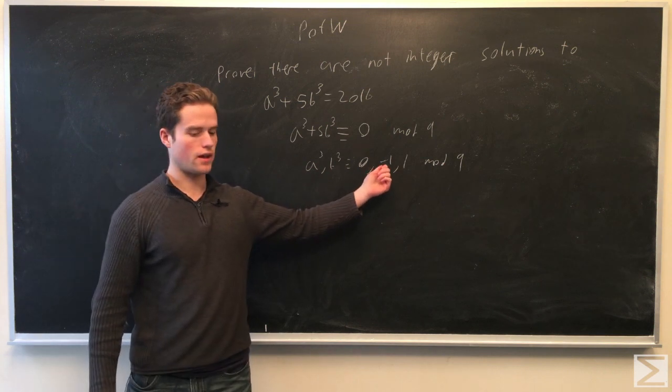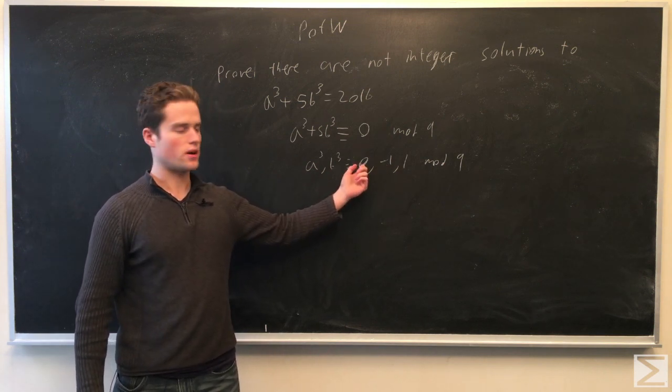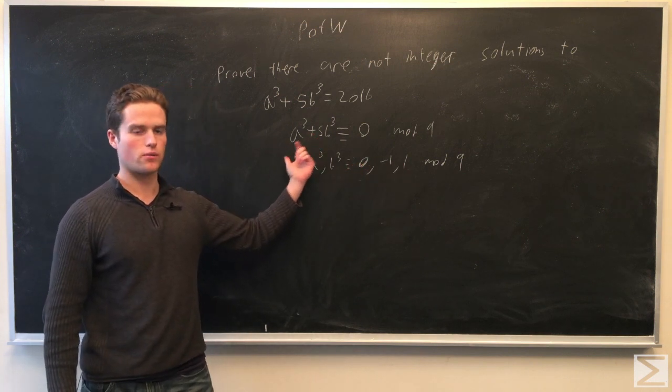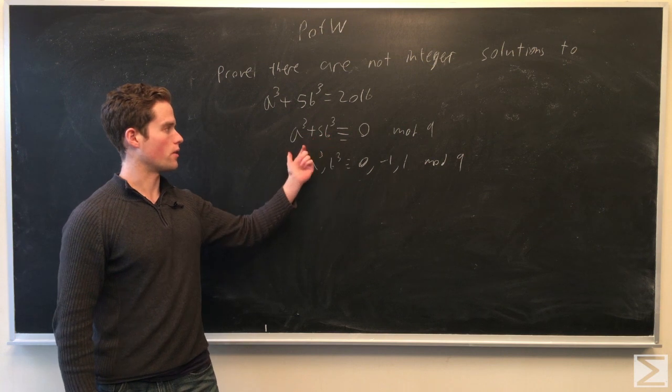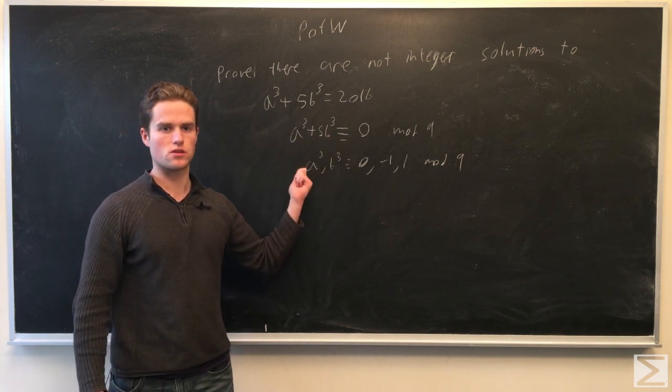We're going to try saying neither of them are congruent to 0 mod 9 and say they're congruent -1 or 1. -1 and -1 don't work, -1 and 1 don't work, 1 and 1 don't work, so at least one of them must be congruent to 0, but this implies the other one is congruent to 0.